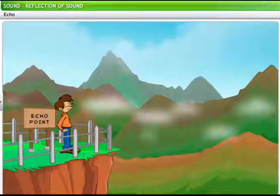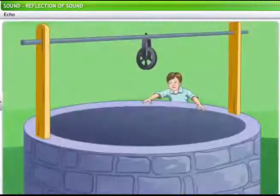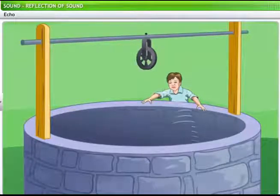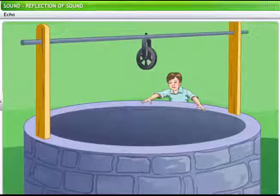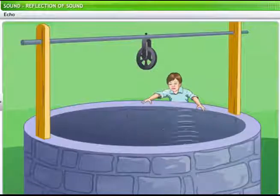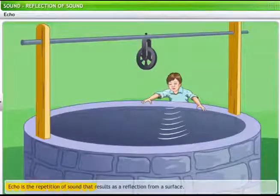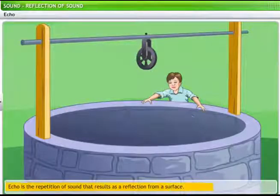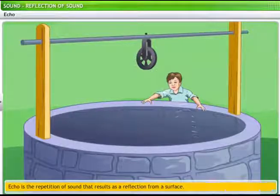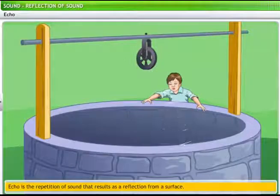We already saw what happens when you shout in an open air in the mountains. Let's now observe this boy shouting into a well. Did you hear that? That was the boy's voice, reflected back from the water in the well. In our daily lives, we call this sort of a reflection an echo. Thus, an echo is repetition of sound that results as a reflection from a surface. Here's an interesting fact about the origin of the word echo.